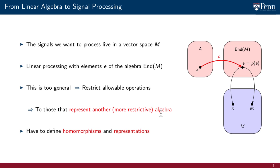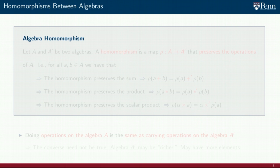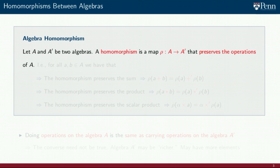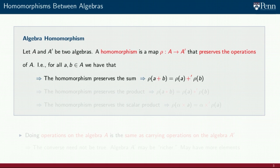For this block diagram to make sense, we need to introduce and explain the notion of homomorphism and representation of an algebra. We begin with the definition of homomorphisms between algebras. Consider algebras A and A prime. A homomorphism from A to A prime is a map rho from A to A prime that preserves the operations of A. Namely, for all elements A and B in the algebra A, the homomorphism preserves the sum, in the sense that applying rho to the sum of A and B is the same as summing rho of A and rho of B.